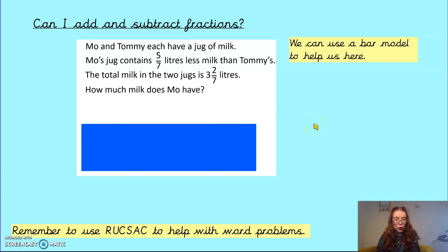Okay, now we've got a cheeky little word problem. Now, today's problem in reasoning and problem solving is all around word problems. So hopefully we can use bar models to help us out with those. Okay, Moe's jug contains 5 7ths litres less milk than Tommy's. The total milk in the two jugs is 3 litres and 2 7ths. How much milk does Moe have?